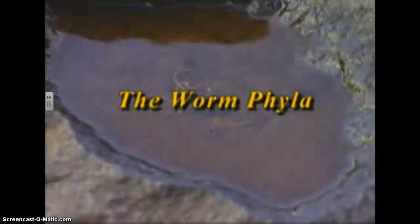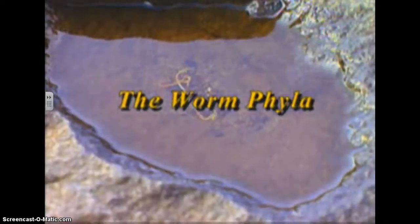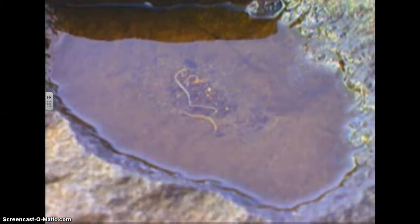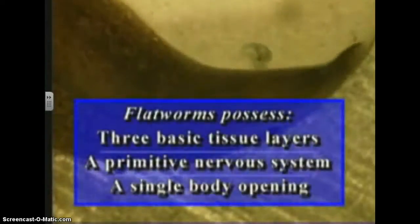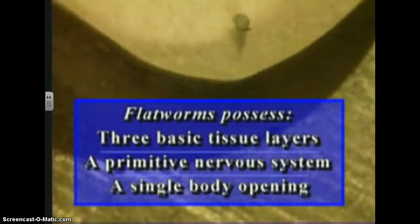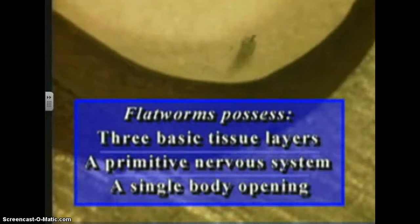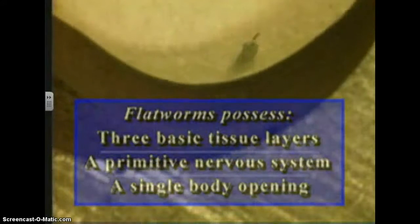After the stinging animals, the next most complex group are the worms, and there are about seven different phyla of them. The very simplest worms are called flatworms. Most of them live in the oceans, but some live inside of other animals where they are dangerous parasites. Flatworms possess three basic tissue layers, a primitive nervous system, and a single body opening through which pass both food and wastes.